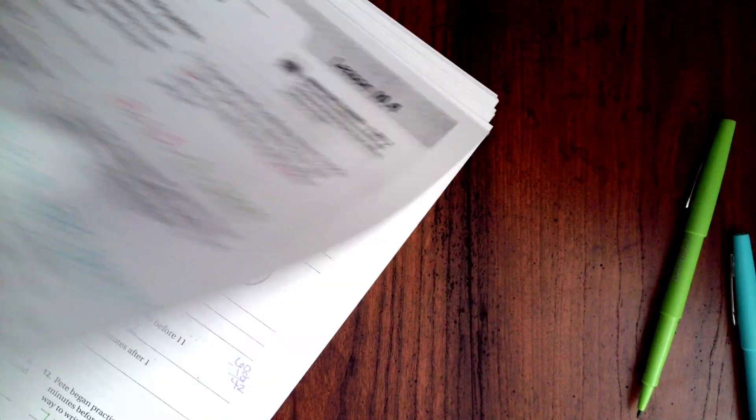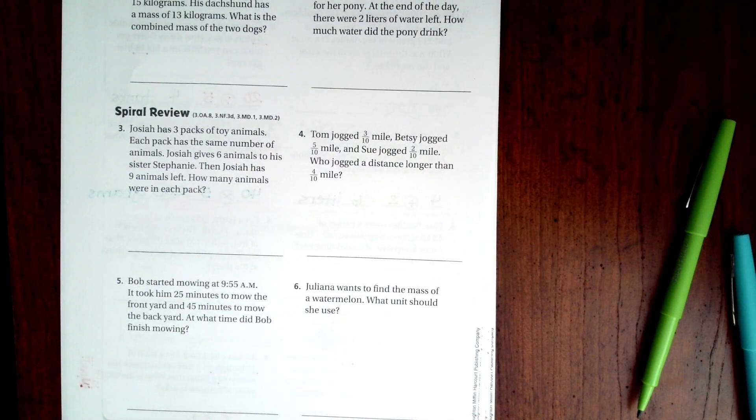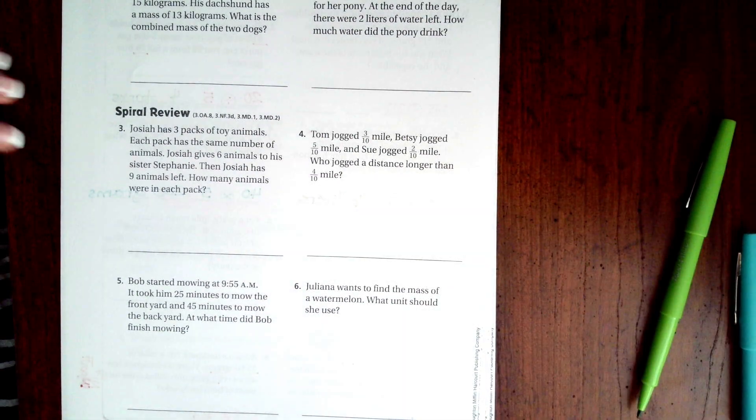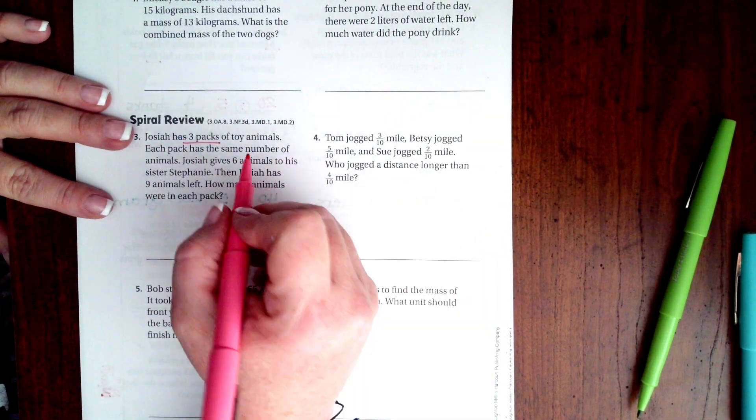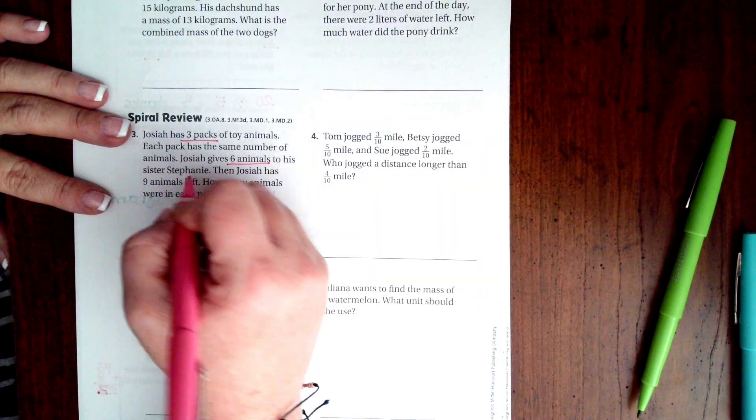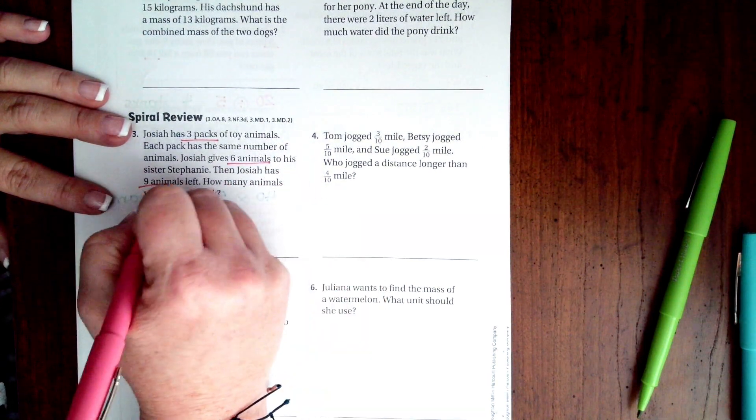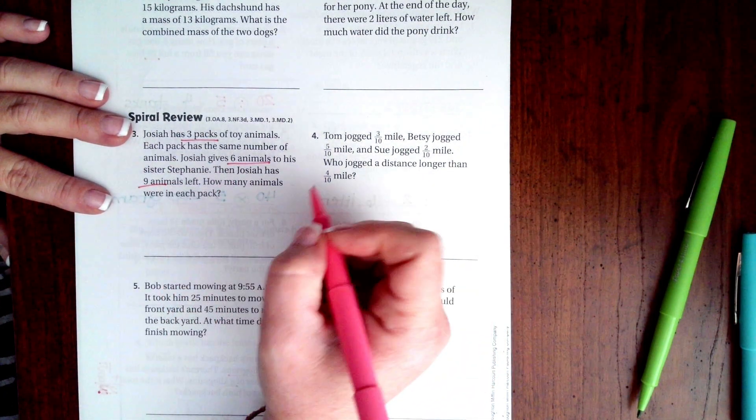We're going to flip it over onto the back where you guys are going to do the lesson check, just like always. And we're going to do the very last spiral review of the chapter. Josiah has 3 packs of toy animals. Each pack has the same number of animals. Josiah gives 6 animals to his sister, Stephanie. Then Josiah has 9 animals left.